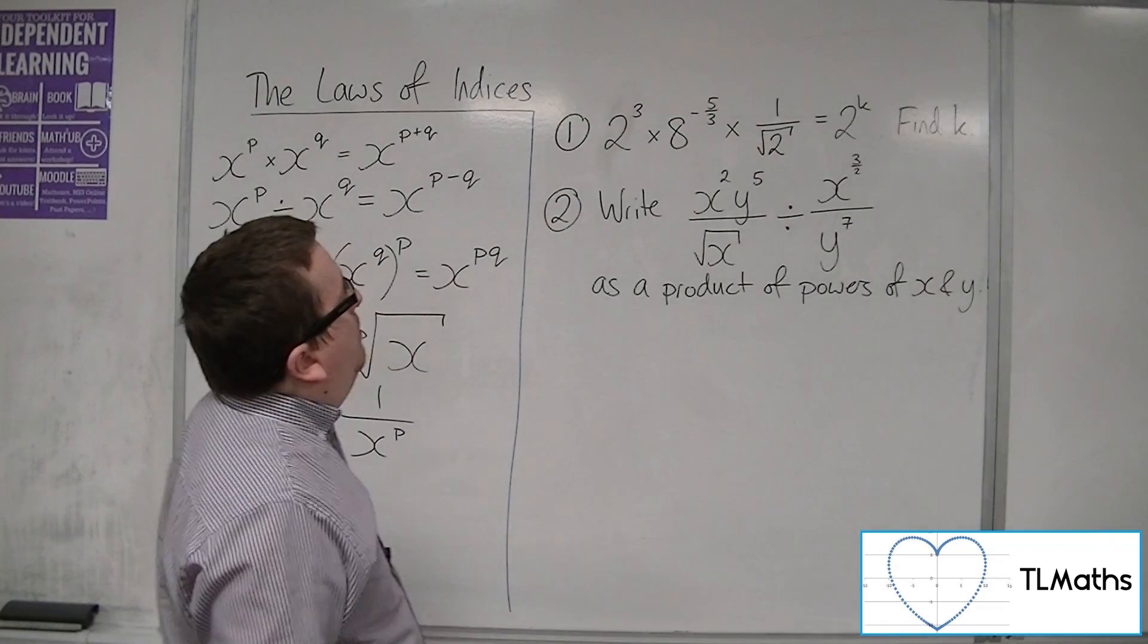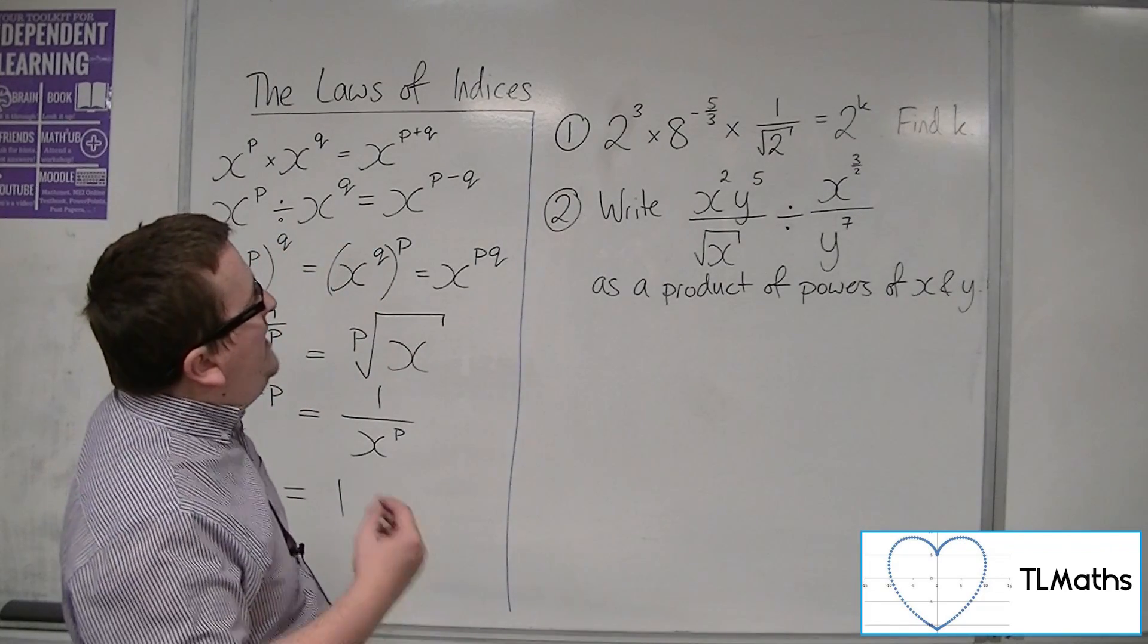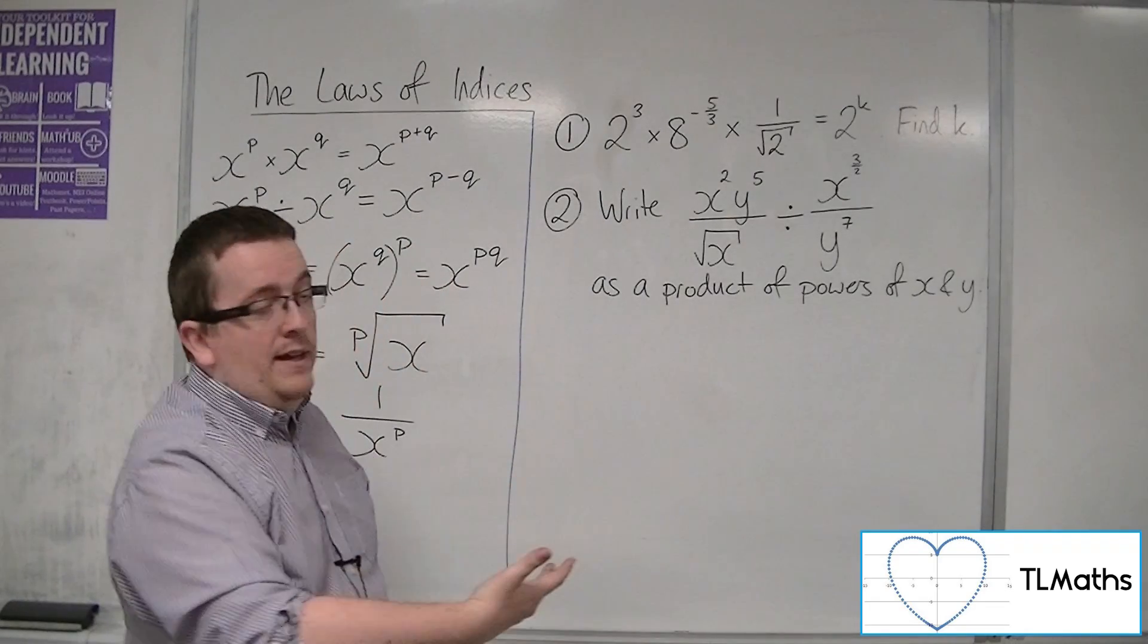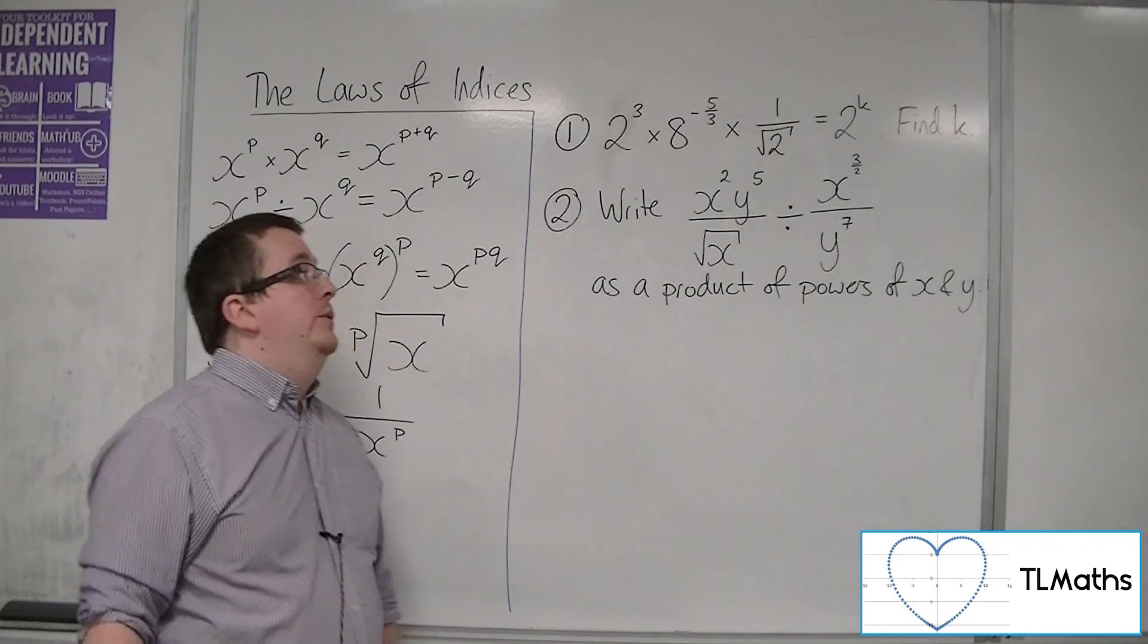In this first problem, we've got 2 cubed times 8 to the minus 5 thirds times 1 over the square root of 2 equals 2 to the k, and we need to find that value of k.